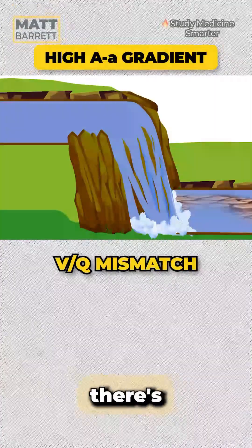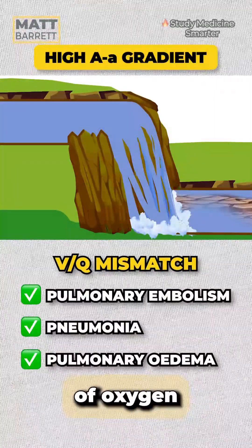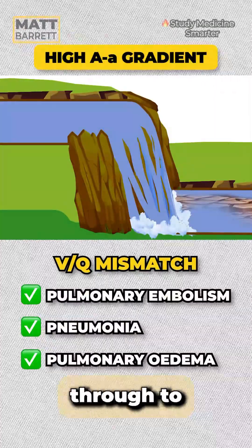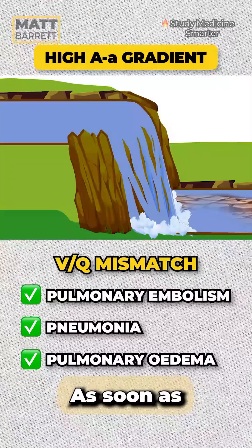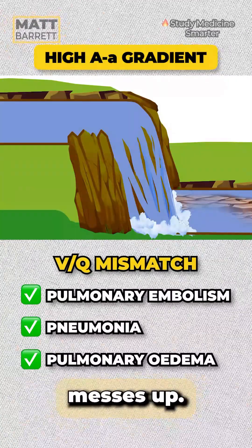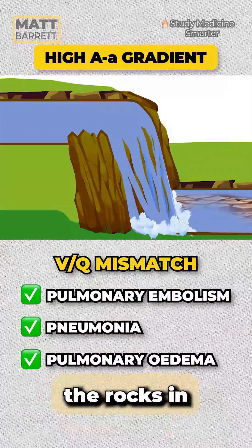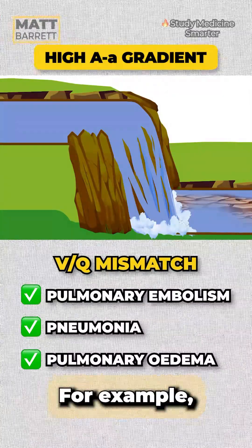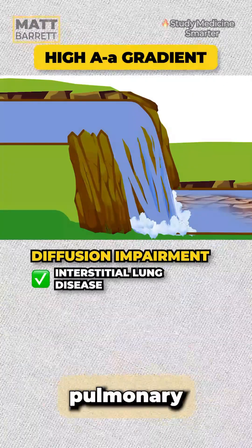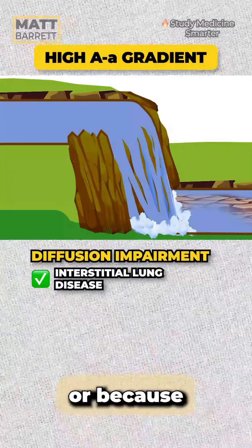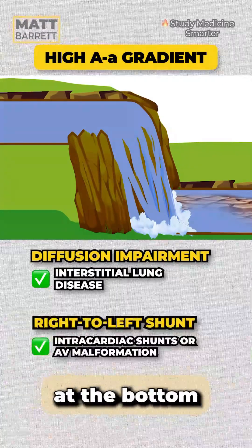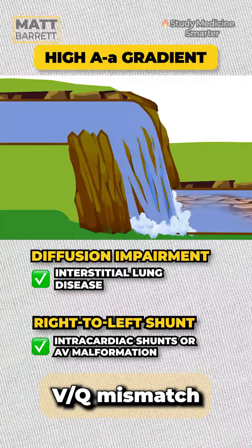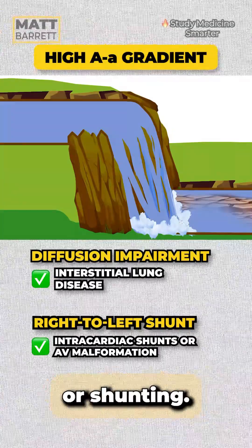When it's high, it means there's plenty of oxygen at the top — the alveoli are full of oxygen, but it's not getting through to the blood. As soon as the water goes over the edge, it all messes up. That's because the rocks in the waterfall are too thick — for example, a diffusion defect like pulmonary fibrosis. Or because the stream at the bottom is poorly connected to the water flow — we're typically thinking of VQ mismatch or shunting.